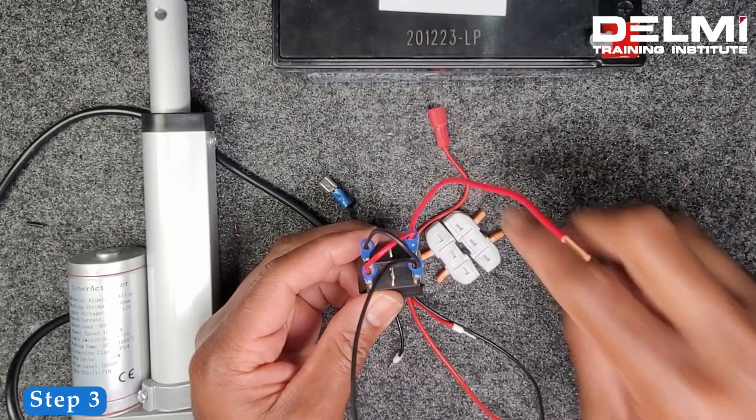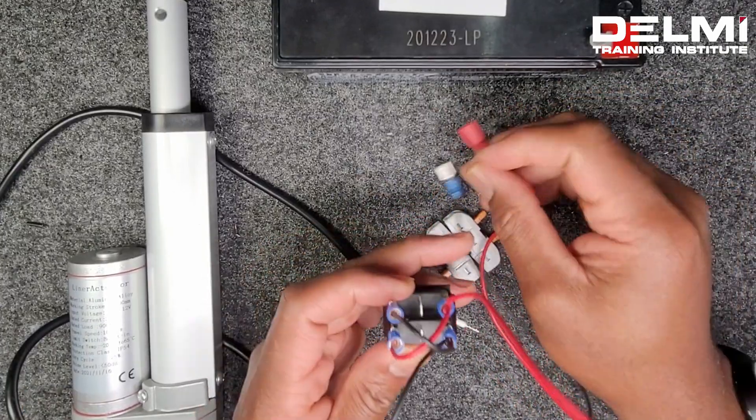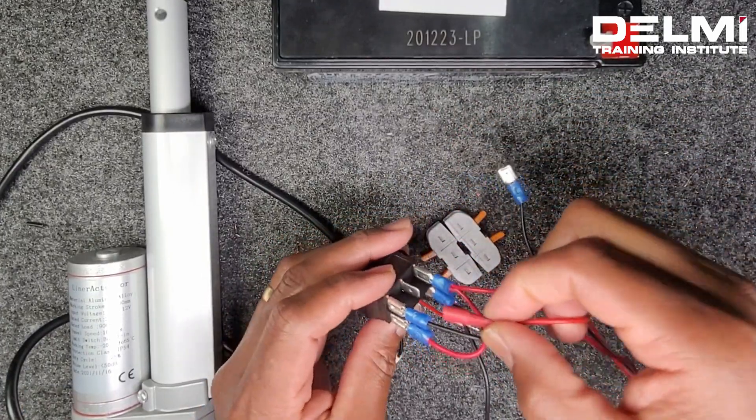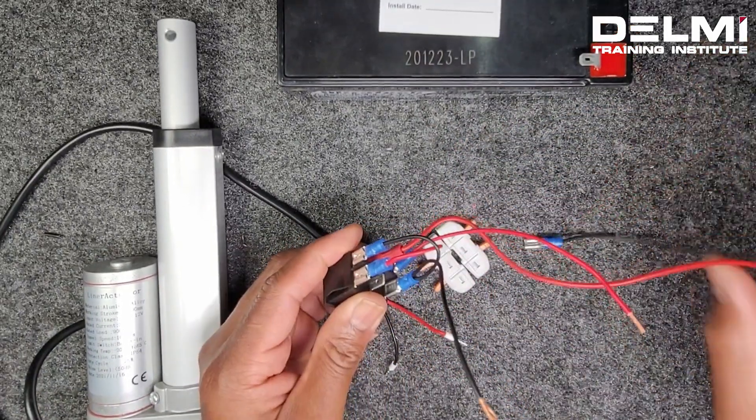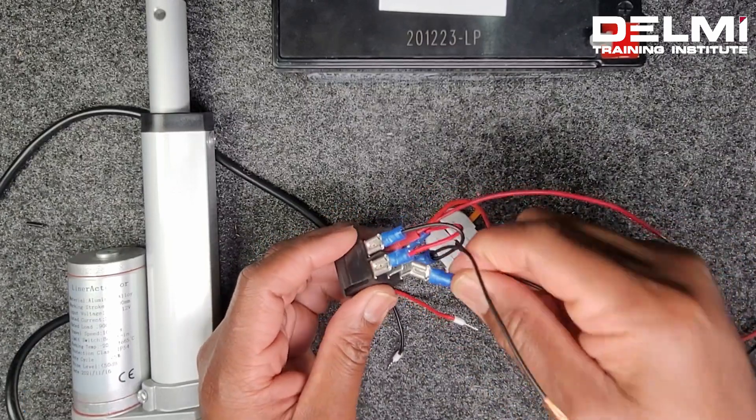Step three, take your positive input from the battery source. Step four, take your negative input from the battery source.